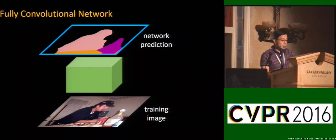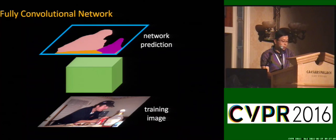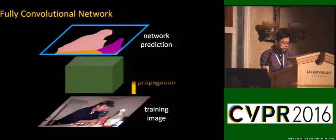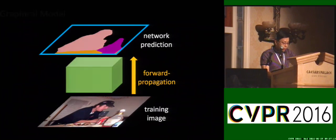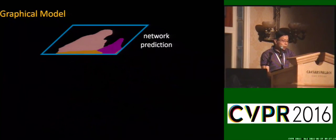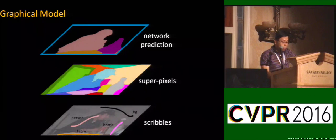Our fully convolutional network follows conventional forward propagation to produce the network prediction. Since its construction is not our main contribution, we refer the audience to our paper for more details. The module takes input images and outputs pixel-wise labeling. With the pixel-level prediction, we update the graphic model, which builds on superpixels of the training image.